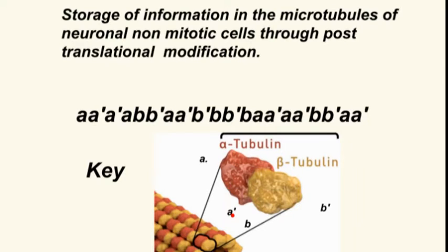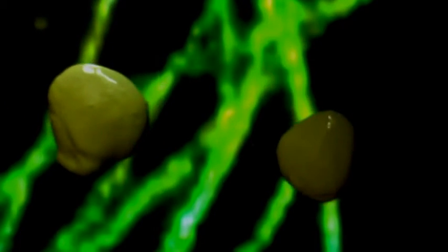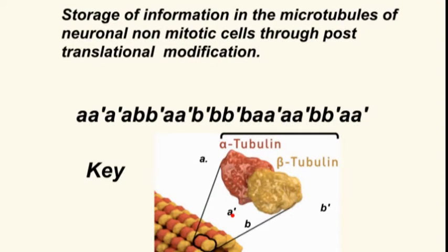The order of the tubulins provides a means for information storage and will affect the destinations of proteins. It is therefore a basic form of memory.